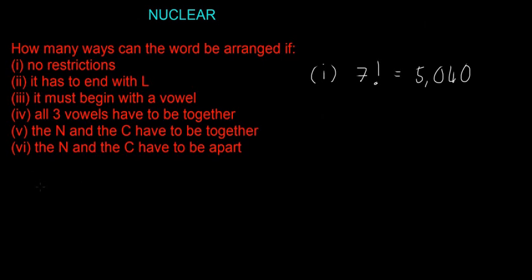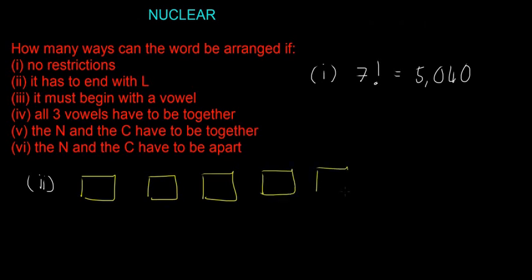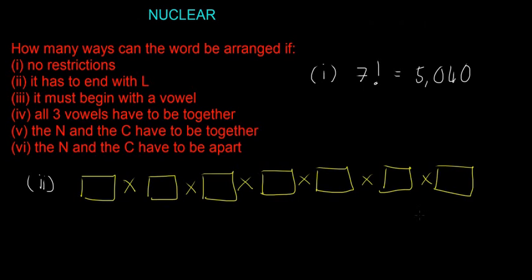If it has to end with L, we're going to use the box method. We draw seven boxes, all multiplied by each other. We start with the restriction rule first: there's only one L in 'nuclear', so the last box has only one option — it has to be an L.